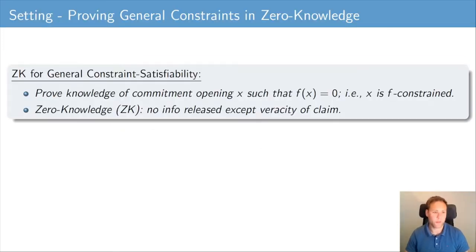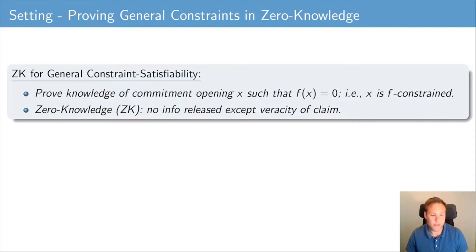In this work we consider the following zero-knowledge scenario. A prover is committed to a secret input value x and it wishes to convince a verifier that it knows an opening to this commitment and that this opening satisfies an arbitrary public constraint. Moreover, it wishes to do this without releasing any additional information besides the veracity of the claim — in other words, we want the prover to be able to do this in a zero-knowledge manner.